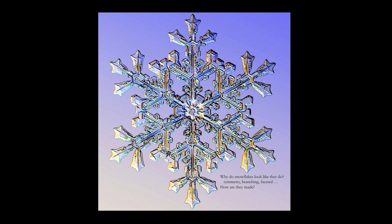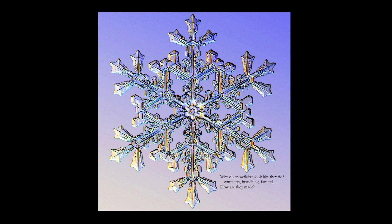We can look really close — get down into the insides of the snowflake and try to see what makes these guys tick. Let's start at the beginning and take your standard snowflake. Why does it have this shape? It has a certain symmetry; there's branching and side branching, there are facets on these crystals. If you want to ask why the crystal looks like this, you have to ask where it came from, how it was made.